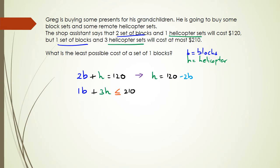Once we have H as 120 minus 2B, we can replace it in the second equation. Our second equation becomes: 1B plus 3 times H — but H is actually equal to 120 minus 2B — and all of this is less than or equal to 210.